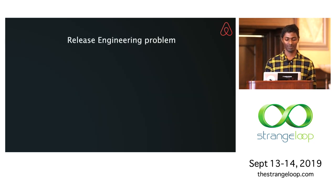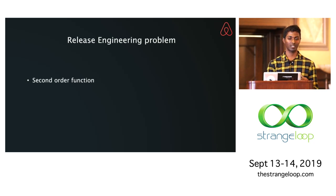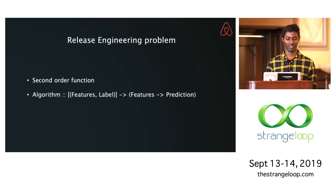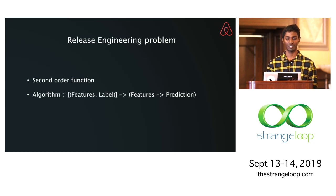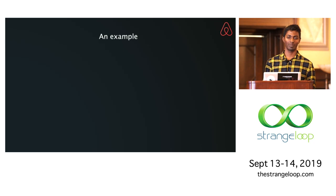There are two problems. The first is a release engineering problem. When you talk about release engineering you generally think about a first-order function — taking a function written by application developers to handle data and convert it into actions. But machine learning is peculiar in that it is an algorithm actually generating a function: it consumes labeled data and generates a function which takes unlabeled data and makes predictions. This talk won't focus on that — we'll jump into the second problem, which is dealing with changing data.